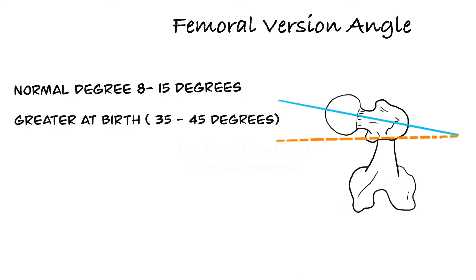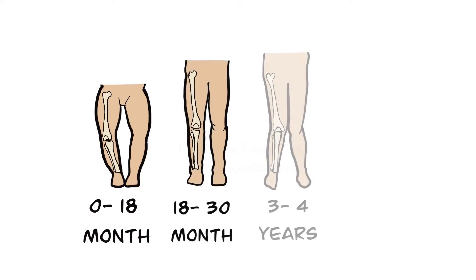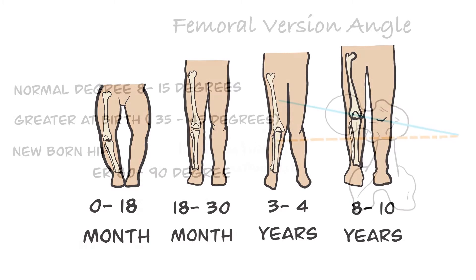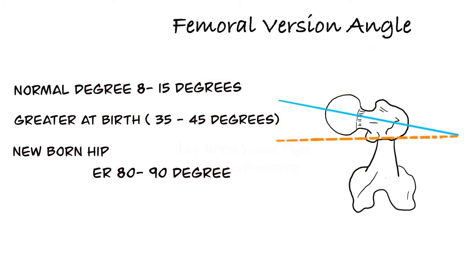Femoral anteversion is greater at birth, 35 to 45 degrees, and it decreases gradually with growth. So the newborn hip can perform external rotation at 80 to 90 degrees but has limited internal rotation as 0 to 10 degrees.